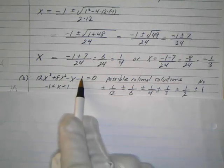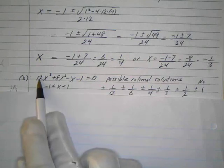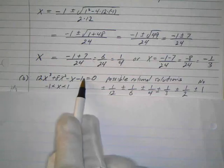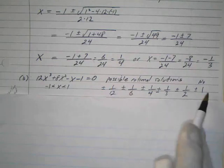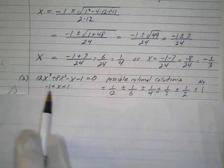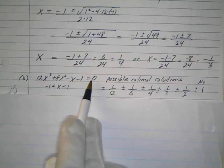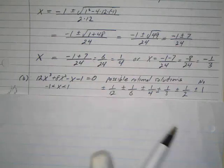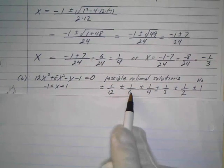The rational root theorem: all possible factors of the numerical term over all possible factors of the coefficient of the highest degree term. So I've got ±1 over all the factors of 12: 12, 6, 4, 3, 2, and 1. By Descartes' rule of signs, we only have one sign change, so I probably have one positive real root. I'll try positive numbers first: 1/12, 1/6, 1/4, 1/3, 1/2.